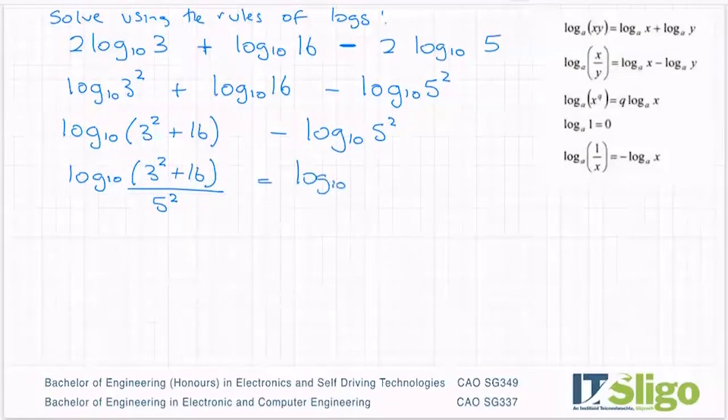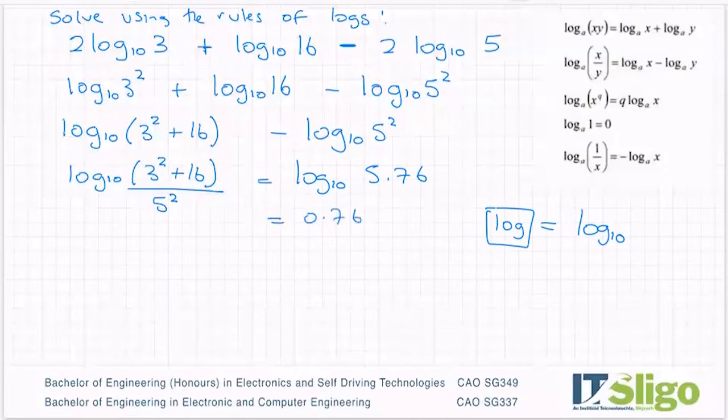And then I would resolve the other bit using my calculator. So 9 by 16 over 25 is a decimal. And then I can use the log button in the calculator for this because that log button without a base, that button on your calculator is logged to the base 10. So I can just use that log button 7.56. That's equal to 0.76.